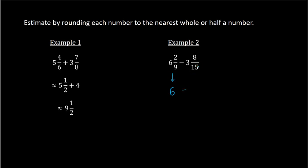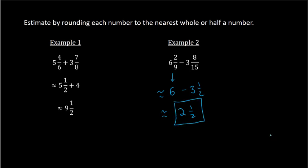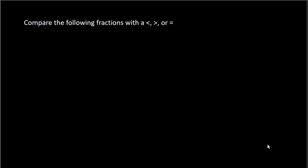Then 3 and 8/15 — 8/15 is almost half, because half of 15 is 7.5, and this is 8/15, so it's pretty close to 3 and 1/2. So when you subtract, we can do 6 minus 3 and 1/2: 3 minus 1/2 would be 2 and 1/2. So our rounded answer would be 2 and 1/2. That is a review of estimating.